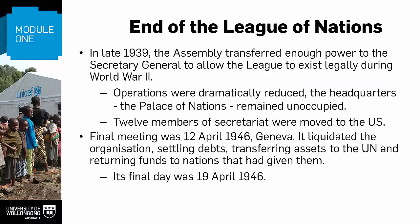The end of the League came with the outbreak of World War II. Although in late 1939, the Assembly did transfer enough power to the Secretary-General to allow the League to exist legally during the war, operations were dramatically reduced. The headquarters, the Palace of Nations, remained unoccupied, but 12 members of the Secretariat were moved to the US. The final meeting was 12 April 1946, in Geneva. That meeting liquidated the organization, settling its debts, transferring assets to the United Nations, and returning funds to nations that had given them. Its final day was 19 April.